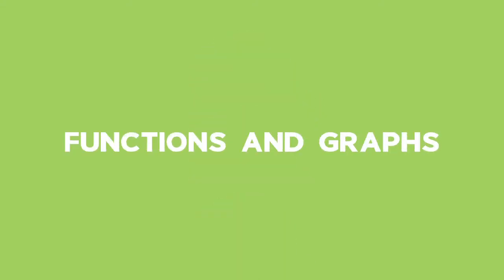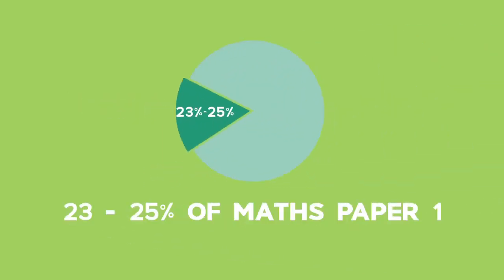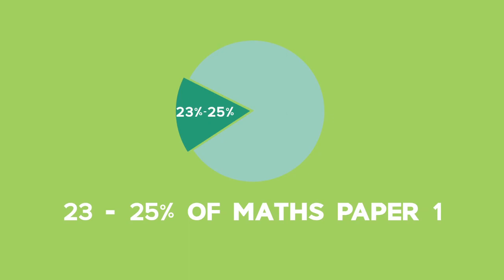Functions and graphs are roughly 35 plus minus 3 marks in the final exam, which is 23 to 25% of Maths Paper 1.